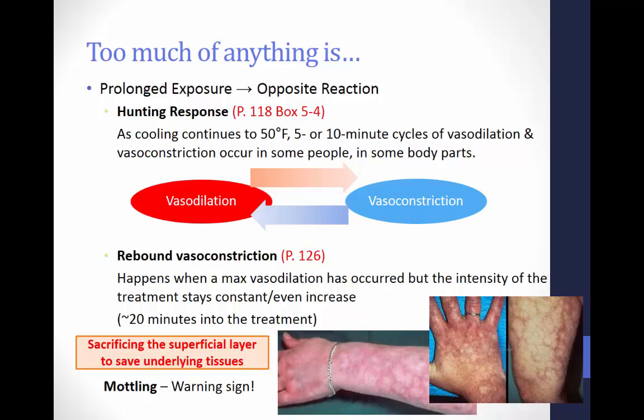Mottling of the skin is a warning sign that tissue temperatures are rising to dangerously high levels. In this case, ghostly white areas and beet-red splotches mark the patient's skin. When mottling occurs, the treatment should be discontinued immediately.